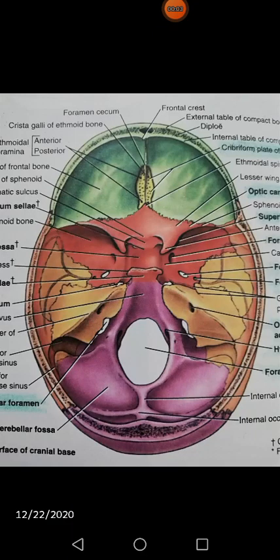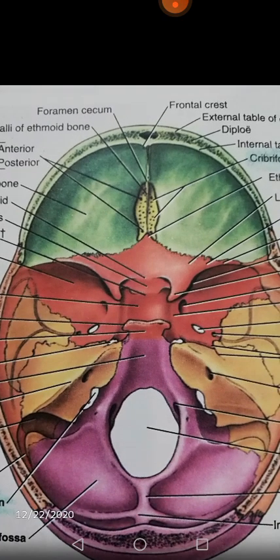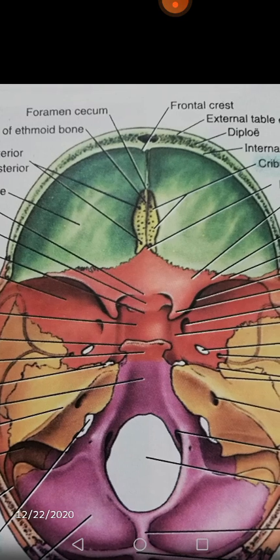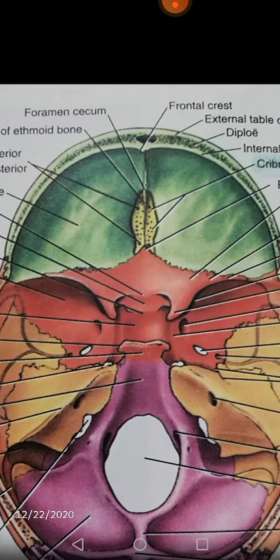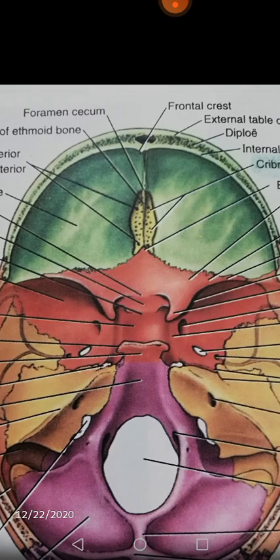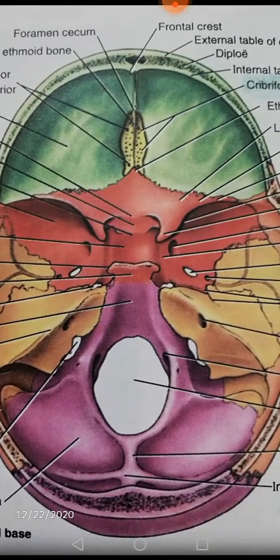Bismillahirrahmanirrahim. Today we are talking about the interior of the skull along with its foramina, especially for the passage of the cranial nerves. Let's start with the description of the anterior cranial fossa, shown in green color and a little bit of red color up to the anterior clinoid processes.